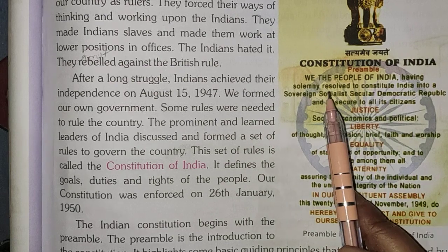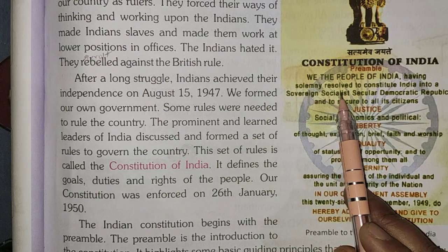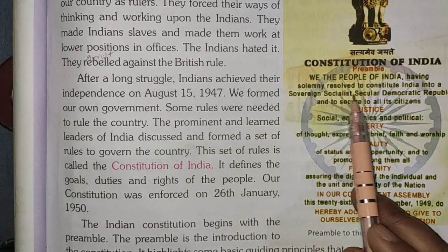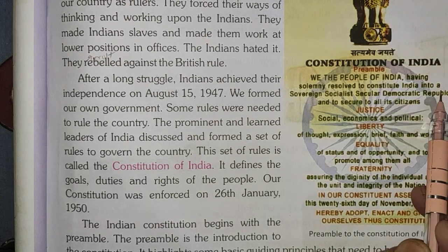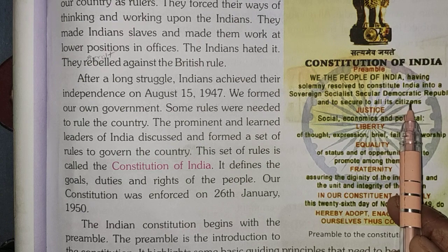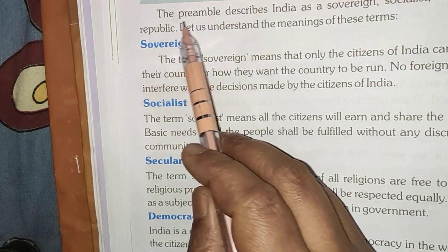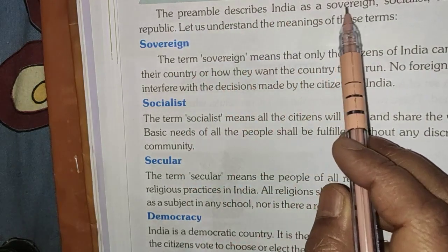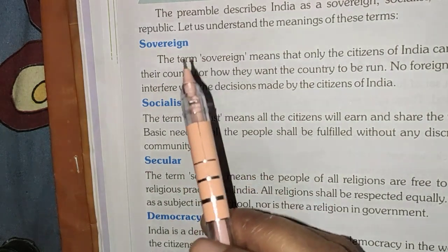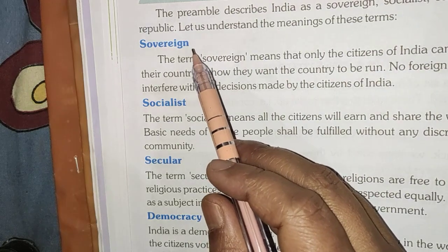See, here what is written: 'We the people of India having solemnly resolved to constitute India into a sovereign, socialist, secular, democratic republic and to secure to all its citizens.' As it is given in your book, the preamble describes India as a sovereign, socialist, secular, and democratic republic. Now we will discuss all these points one by one.